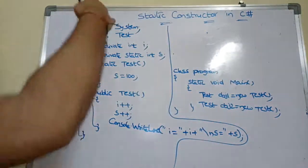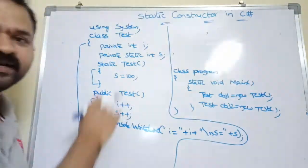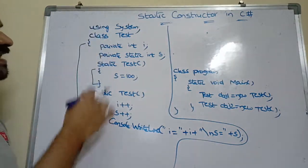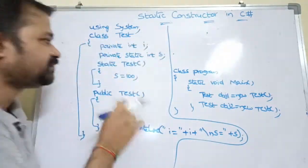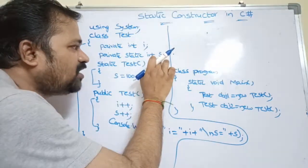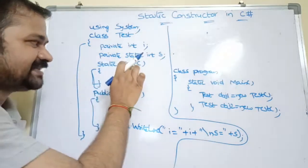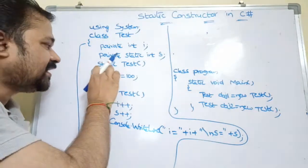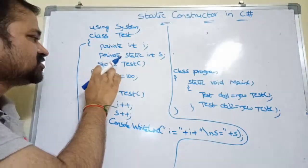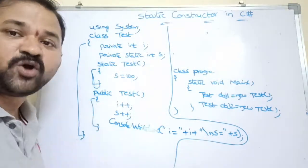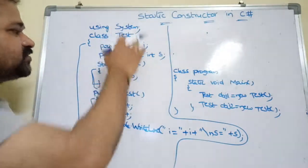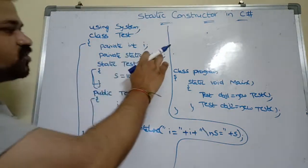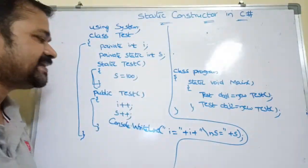Now let's see this example. We have two classes: the first class is Test and the second class is Program. In the Test class we have an instance variable called 'i' and a static variable called 's'. Next, 'static Test()' — this is the static constructor. To define a static constructor, use the modifier 'static', and the constructor name must match the class name, so 'Test'. Its purpose is accessing static variables, so the initial value of 's' is set here.